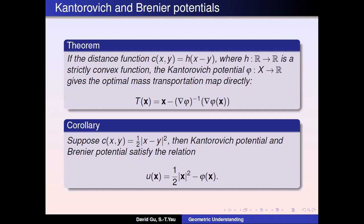From Brenier theory, we get a very simple corollary: the Brenier potential U(x) and the Kantorovich potential phi(x) are related by a special equation. From our previous analysis, the discriminator computes phi and the generator computes U. This equation means that if we know the optimal solution for the discriminator, we can write down the solution for the generator, and vice versa. Therefore, the discriminator and the generator are closely related by this equation — the competition is unnecessary. They should collaborate: if one knows the answer, the other can be written in closed form.